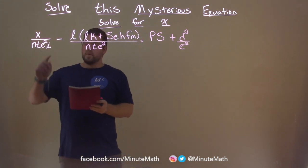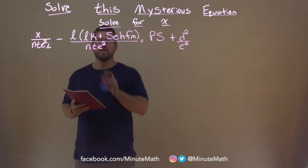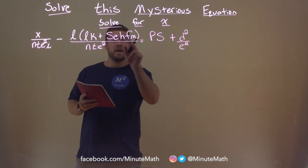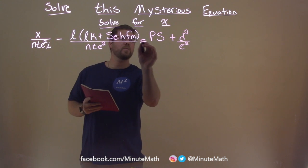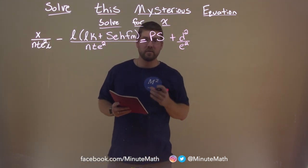What we have here is x over nte squared i minus l times lk plus sehfm over nte squared, and that is set equal to ps plus d squared over e squared.